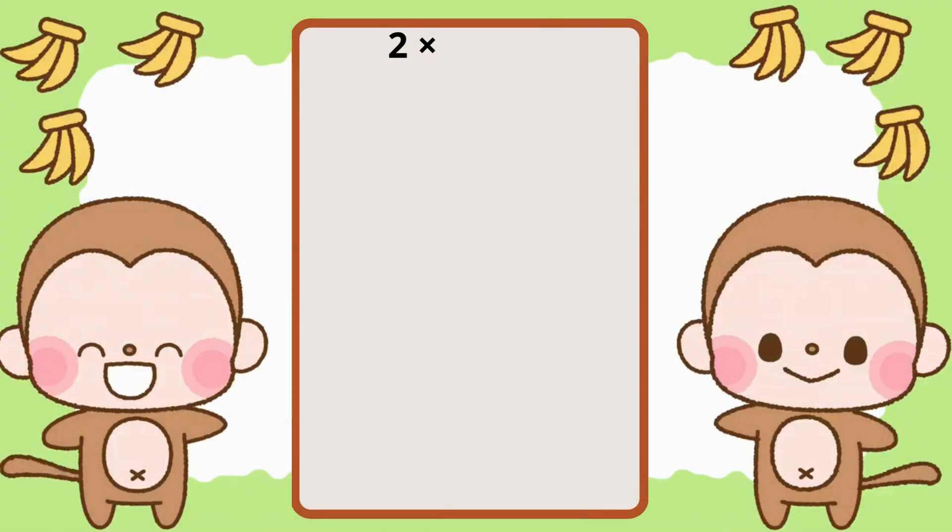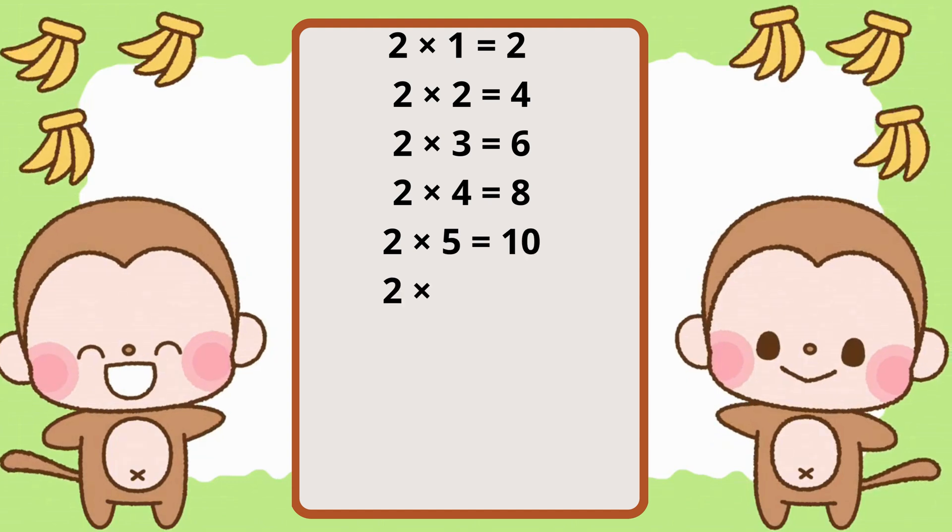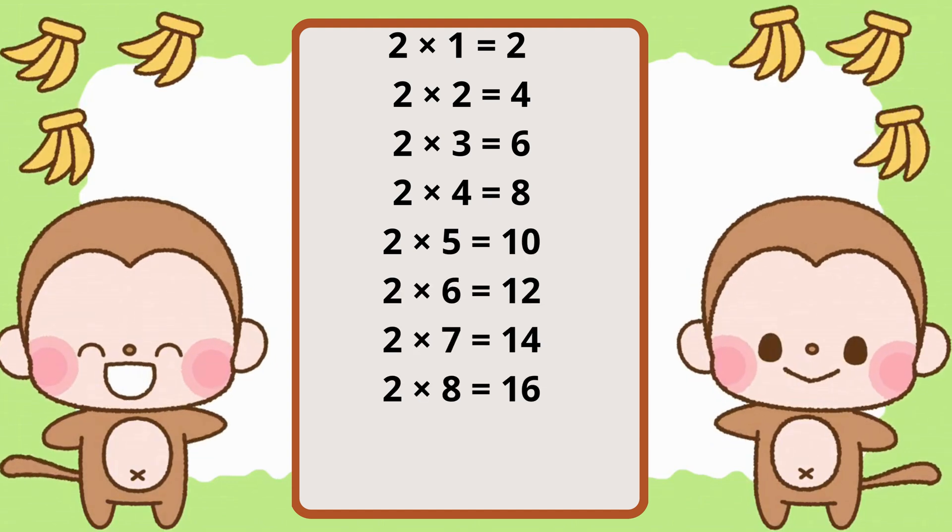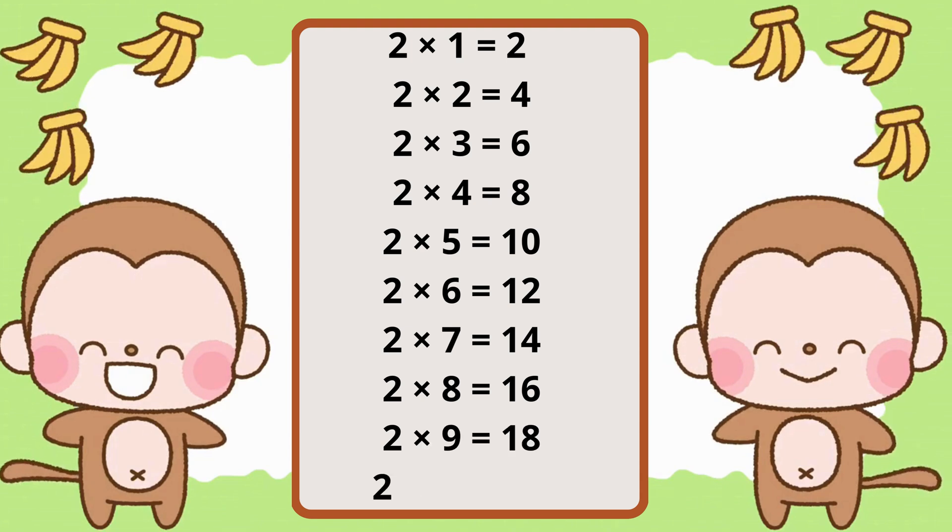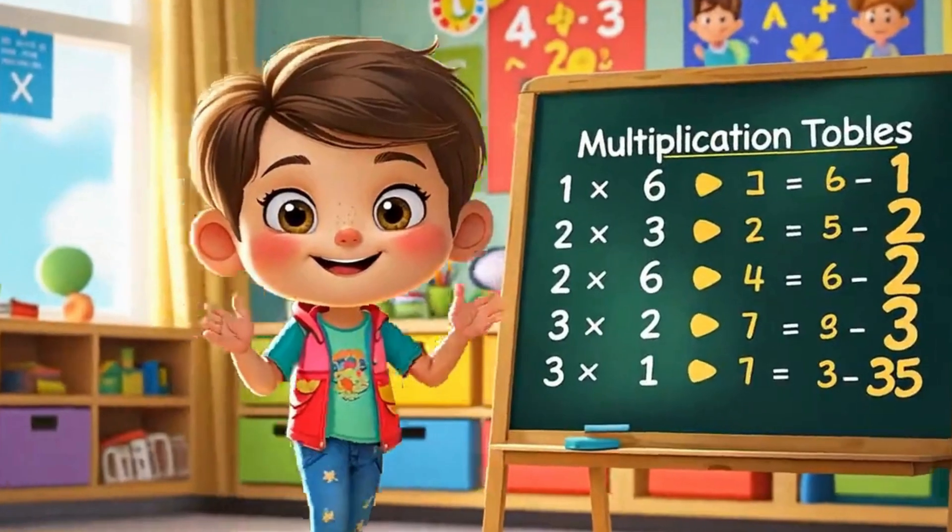2 times 1 is 2, 2 times 2 is 4, 2 times 3 is 6, 2 times 4 is 8, 2 times 5 is 10, 2 times 6 is 12, 2 times 7 is 14, 2 times 8 is 14, 2 times 9 is 18, 2 times 10 is 20!